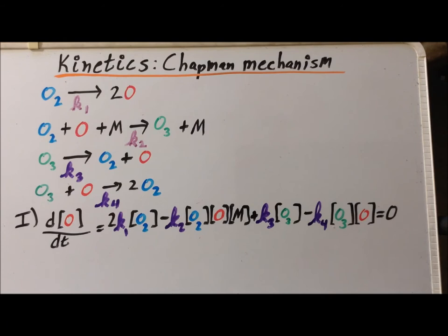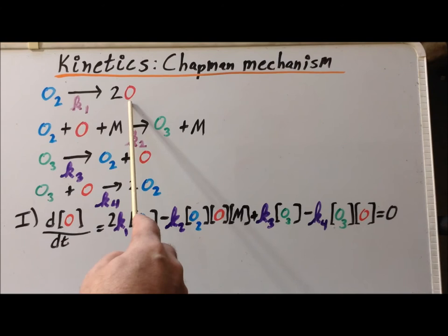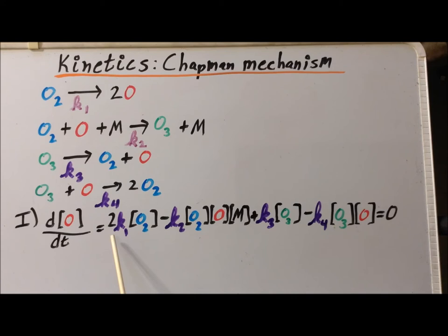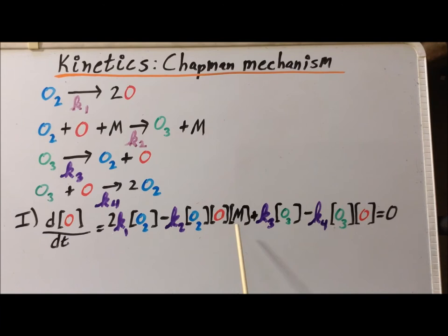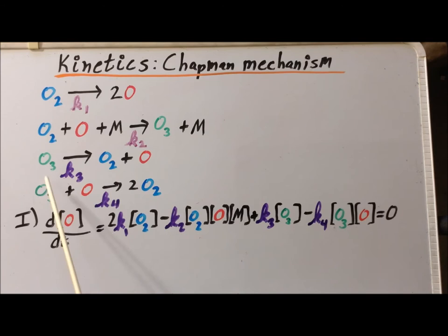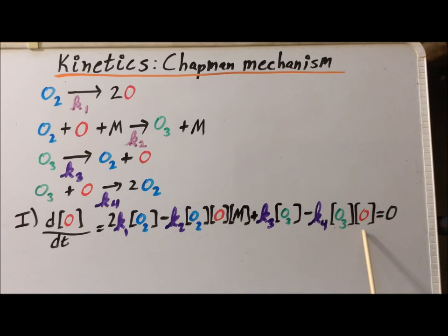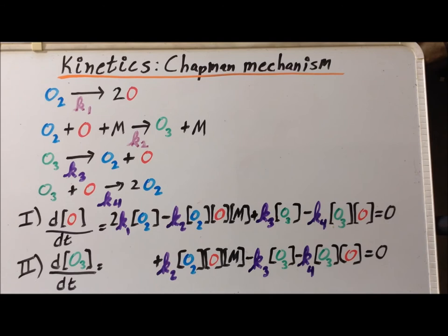First, let us look at the change in the concentration of oxygen atoms per unit time. In the first step, we form two oxygen atoms for one molecule of O2, so that gives 2·K1·[O2]. In the second step, we consume oxygen atoms: −K2·[O2]·[O]·[M]. In the third step, we generate oxygen atoms: +K3·[O3]. In the fourth step, we consume an oxygen atom: −K4·[O3]·[O]. We apply the steady-state approximation and set this equal to zero — call this Equation I.